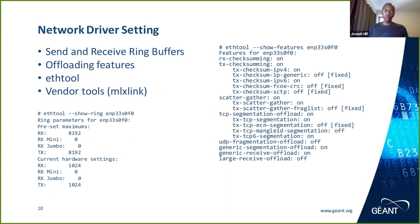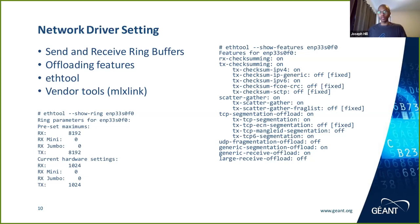Another area for configuring network parameters is the network driver itself. Ethtool is one of the most common ways of configuring this, working across various vendors' devices. Two key things to look at are ring buffer sizes and offloading. Offloading is work done on the NIC instead of the CPU — it relieves CPU load significantly if you have many connections or high packet-per-second rates. Ring buffers work similarly to other buffer parameters — larger buffers are usually considered better, but they can increase latency.